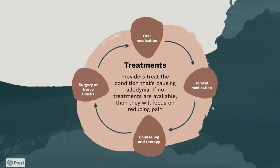There are various treatments that can be possible. First is oral medications. Next is topical medications, which are creams that you can put on your skin. Counseling and therapy is especially helpful for patients with chronic pain who might not benefit from medication. Surgery and nerve blocks involve placing a local anesthetic onto a targeted group of neurons to stop pain perception.